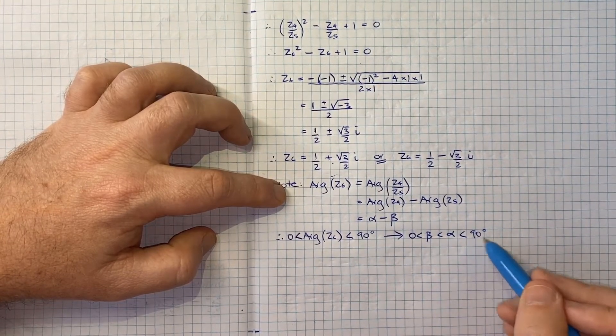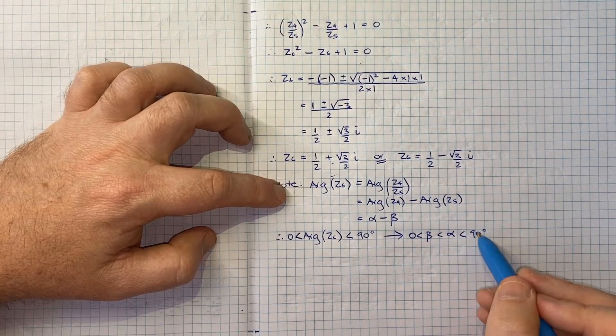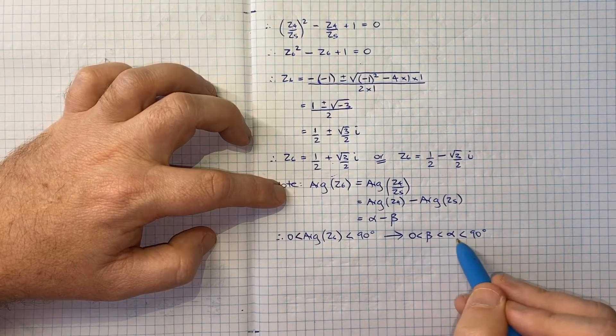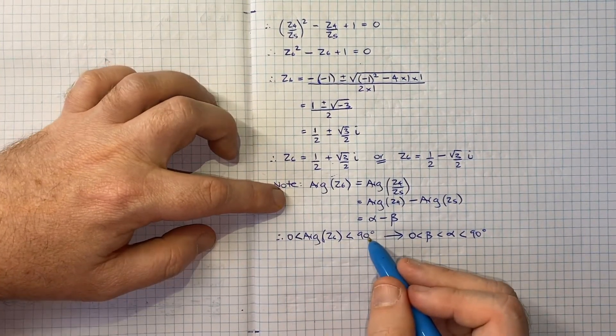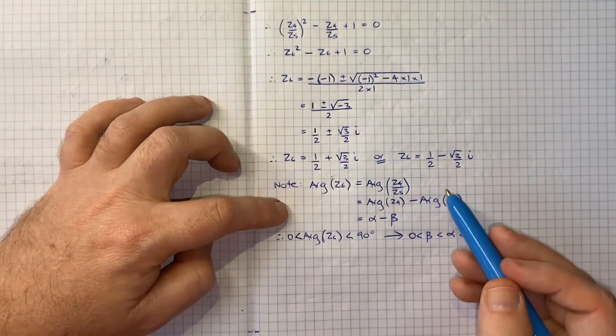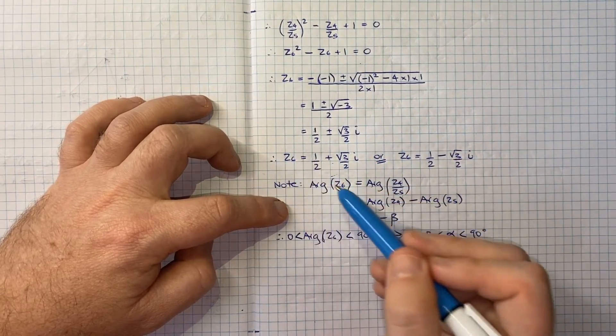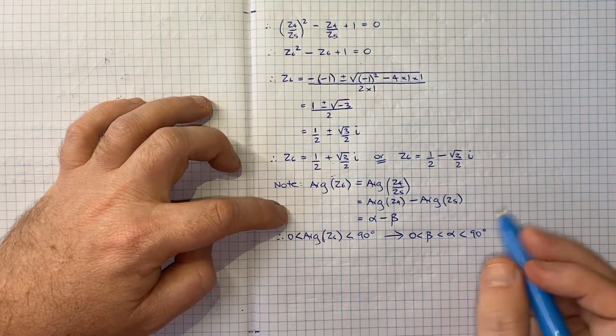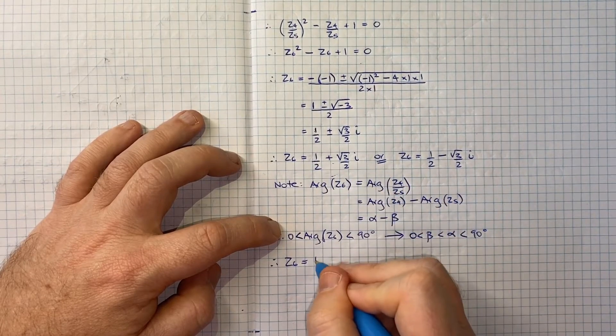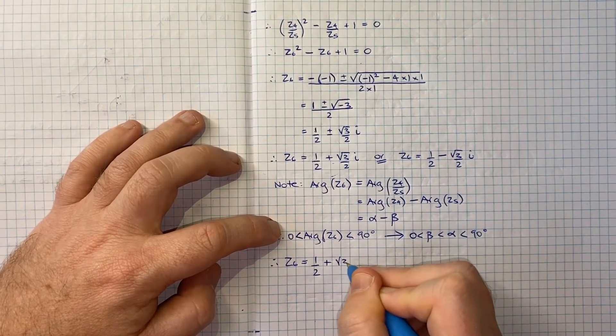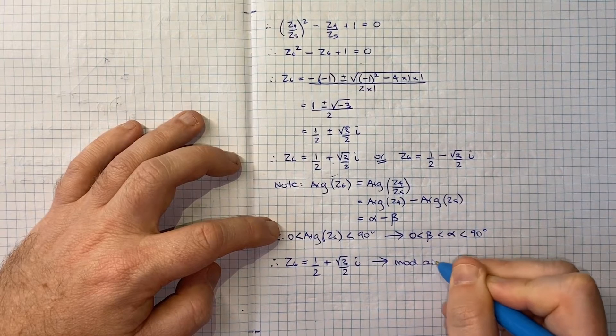Because of that, we know that the difference between them would be greater than zero, because beta is less than alpha. So when you take beta off alpha, you're still going to have a positive number. But because neither of them are greater than 90, you know this is, we know that our argument being alpha minus beta must be between zero and 90. That means we're in quadrant one territory. Therefore we can conclude that Z6 must equal just this one, a half plus root 3 over 2i.